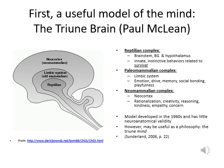Then you have the paleomammalian complex, which includes the limbic system — an old mammalian part concerned with emotion, memory, and social bonding. And then you have the neomammalian complex in the superficial layer — the neocortex — which includes all the cerebral cortex. This area is responsible for rationalization, creativity, reasoning, empathy, and related functions.